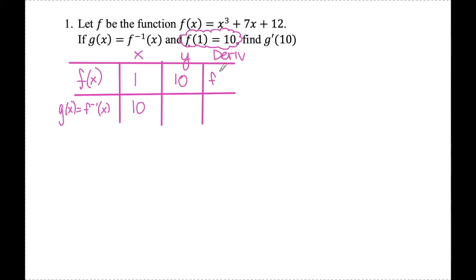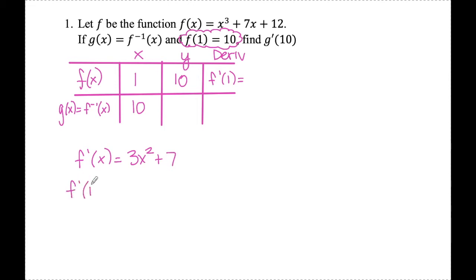Now I need to find f prime of 1. I know the derivative of the inverse at x equals 10 will be 1 over whatever I get for f prime. Finding f prime of x using the power rule gives 3x squared plus 7. So f prime of 1 is 3 times 1 squared plus 7, which gives 10. That means g prime of 10 is 1 over 10.